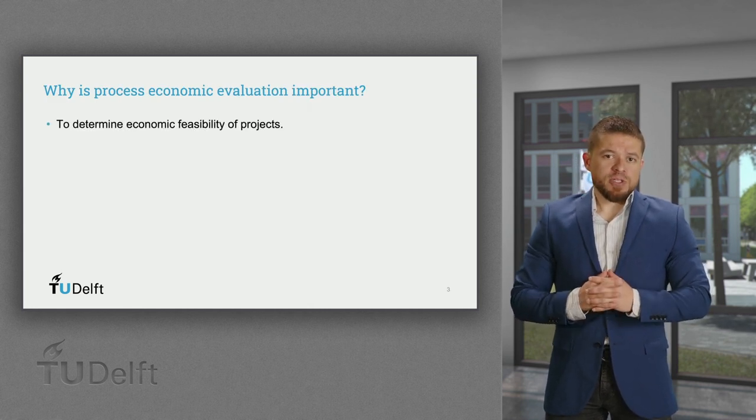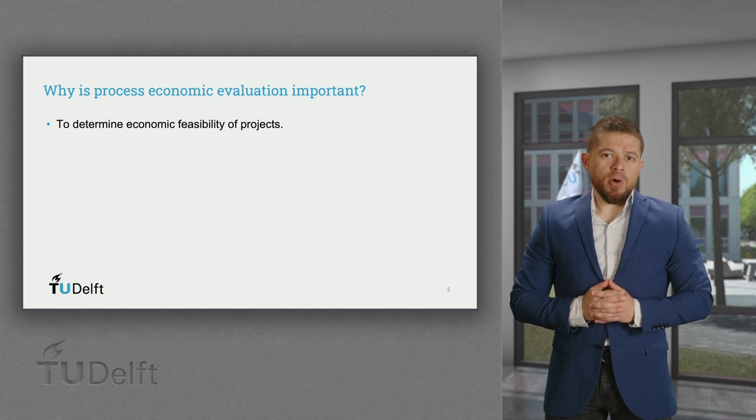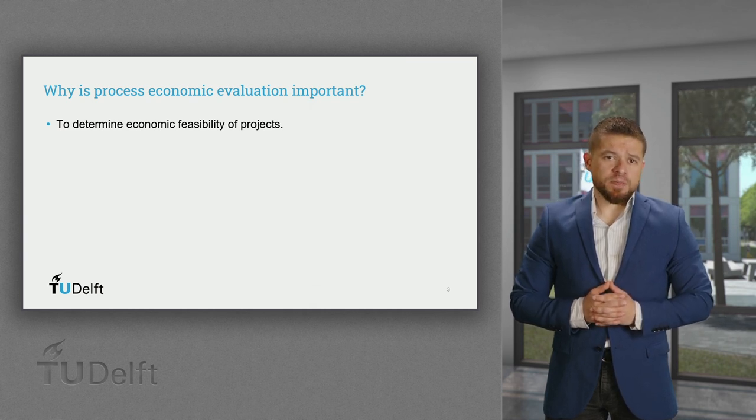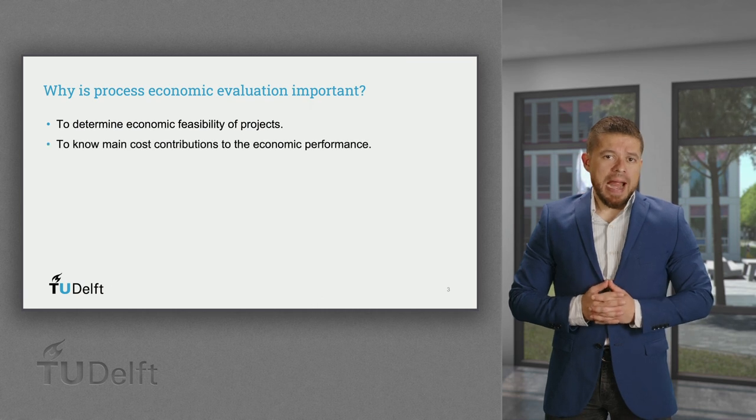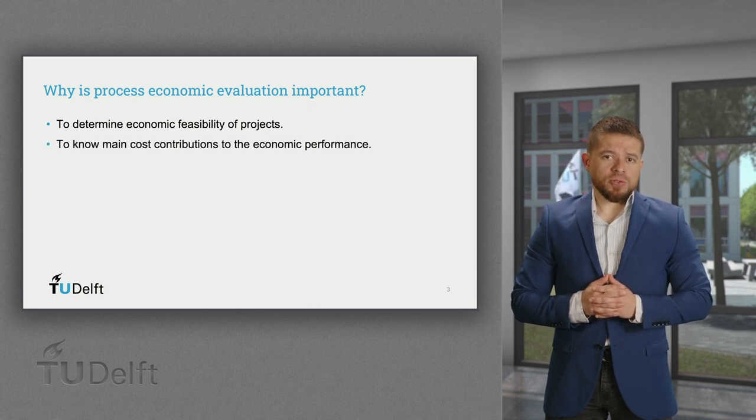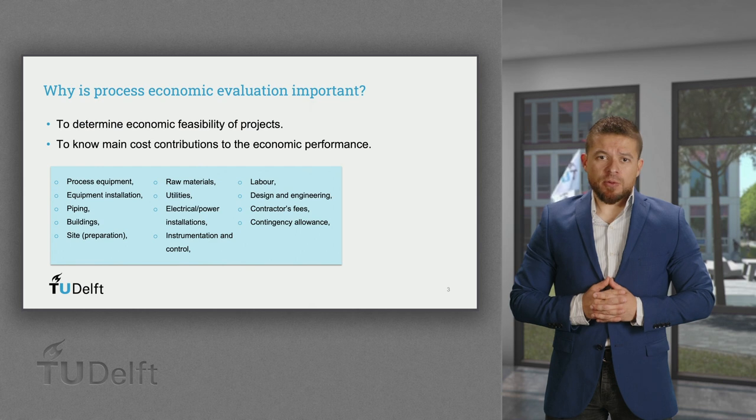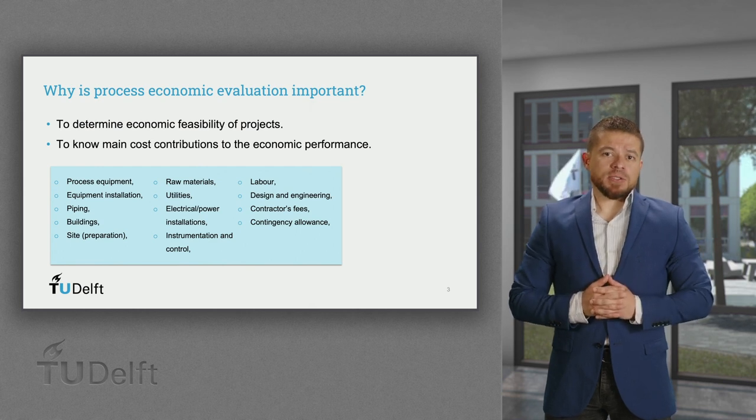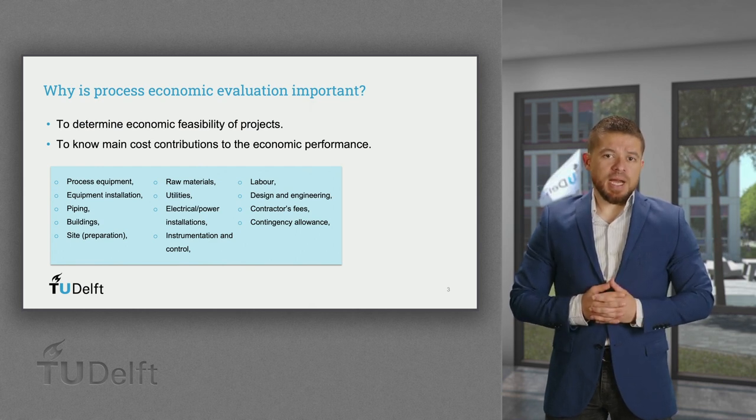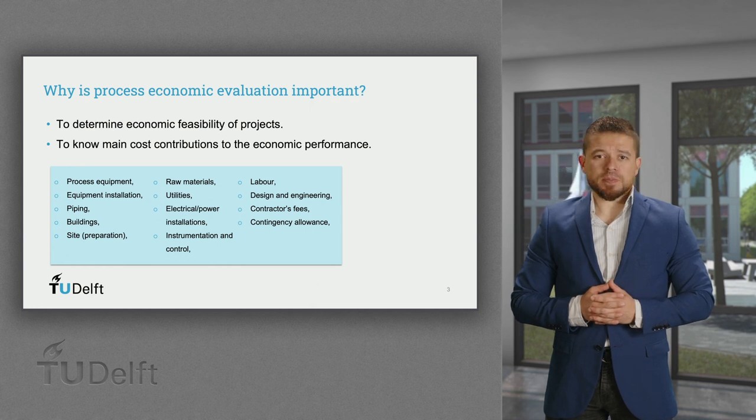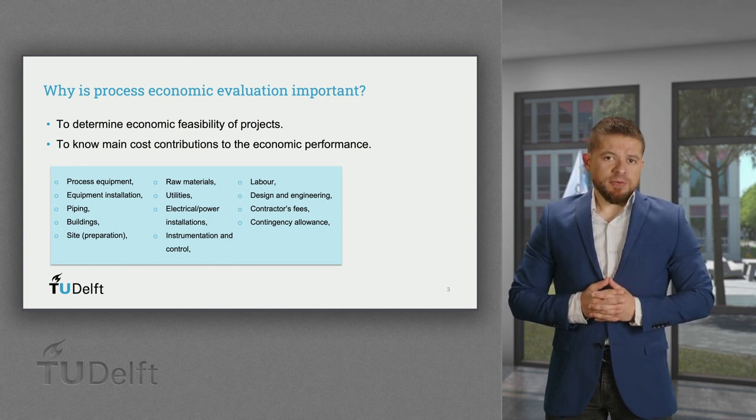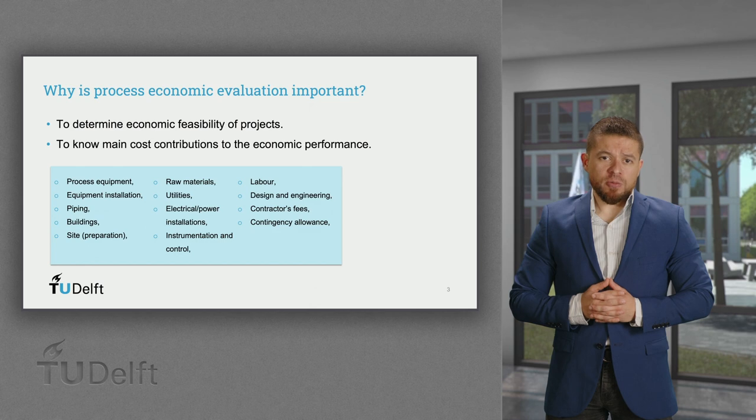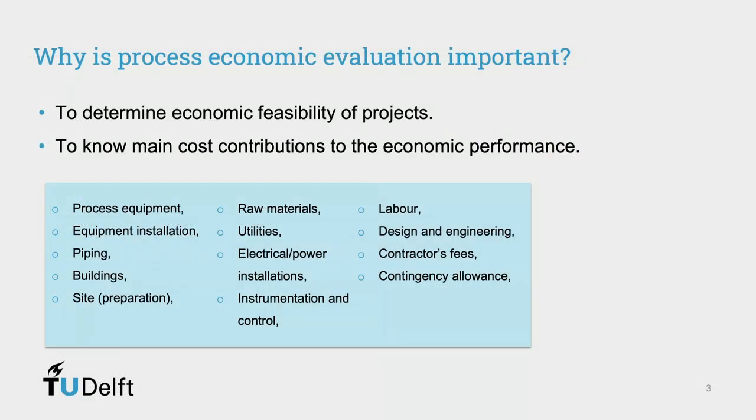The intuitive answer is to know if our bioprocess is economically feasible or not. But we can go deeper and identify the main cost contributors, which could be, for example, capital assets related to physical equipment, building, and installations, raw materials like feedstocks, utilities, and consumables, and other cost related to design, implementation, and operation.